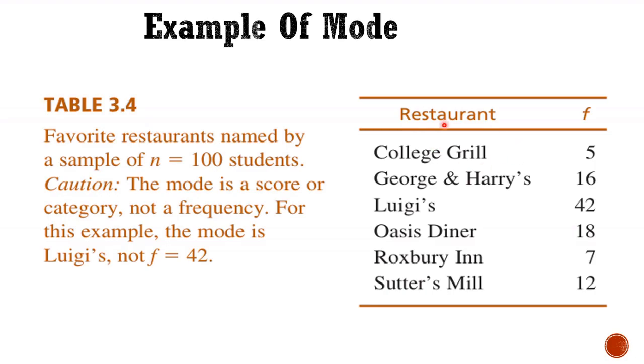Now an example of a mode is given. These are the restaurants and frequencies. We can observe here Lugies is 42 times. It has been voted as the best restaurant by the students. So mode is a score or a category, it is not a frequency. In this case 42 is not the mode. Lugies is the mode. So we have to remember that.